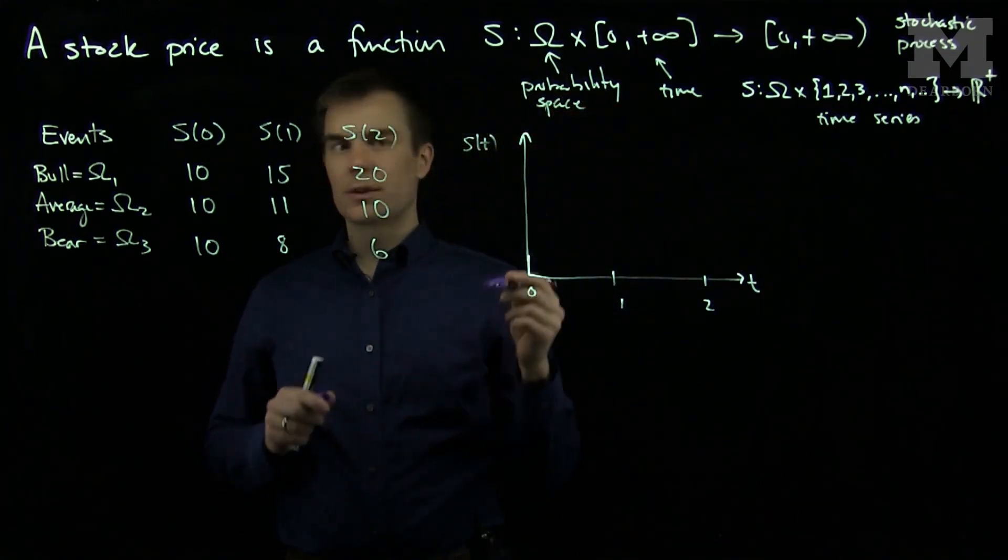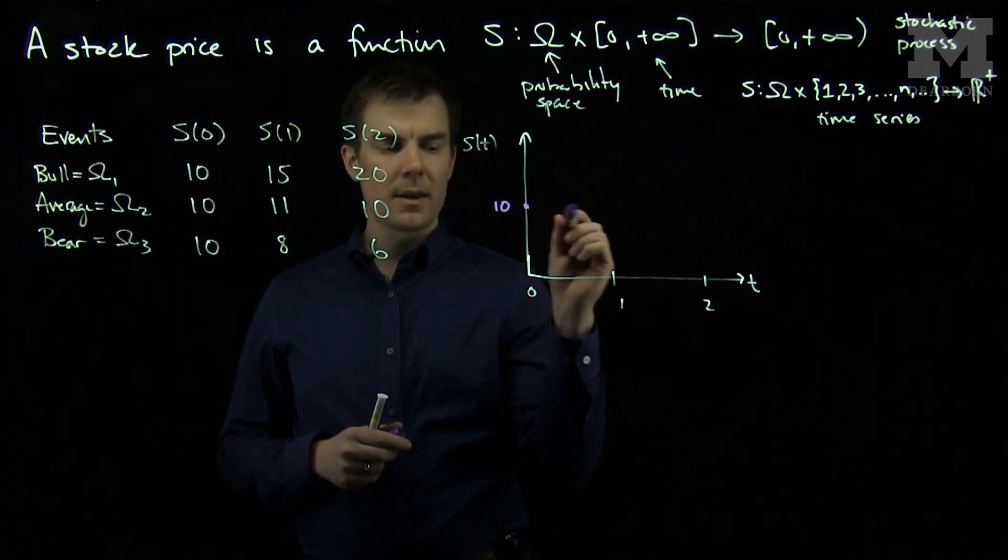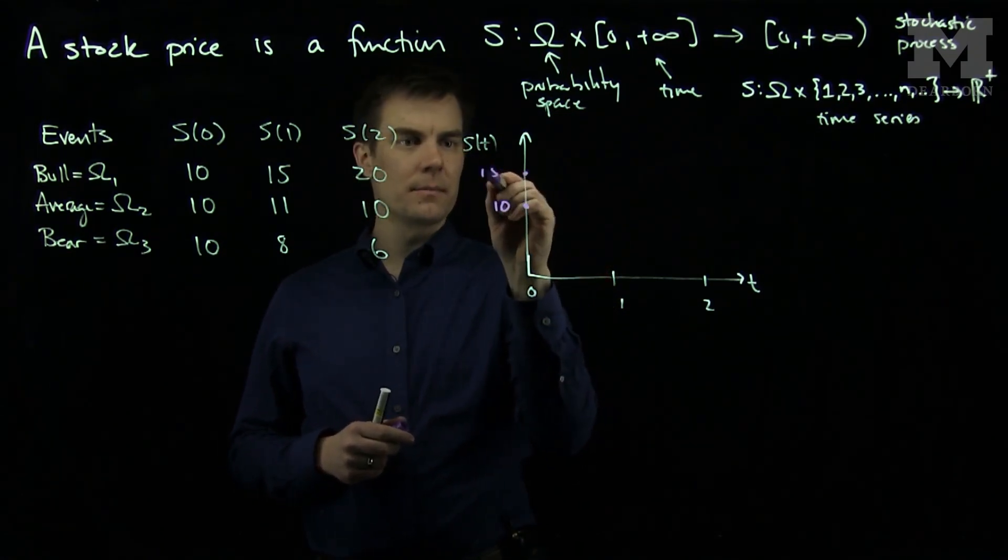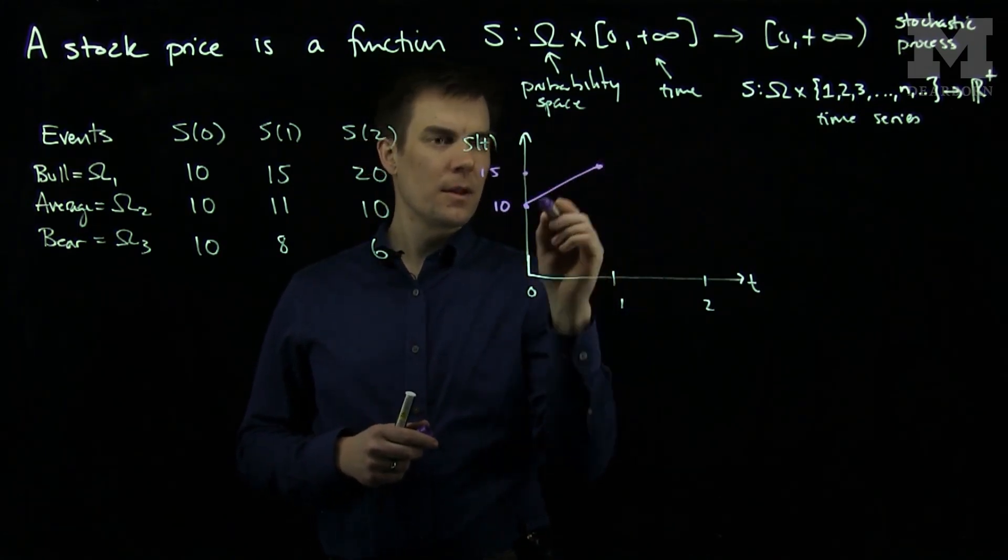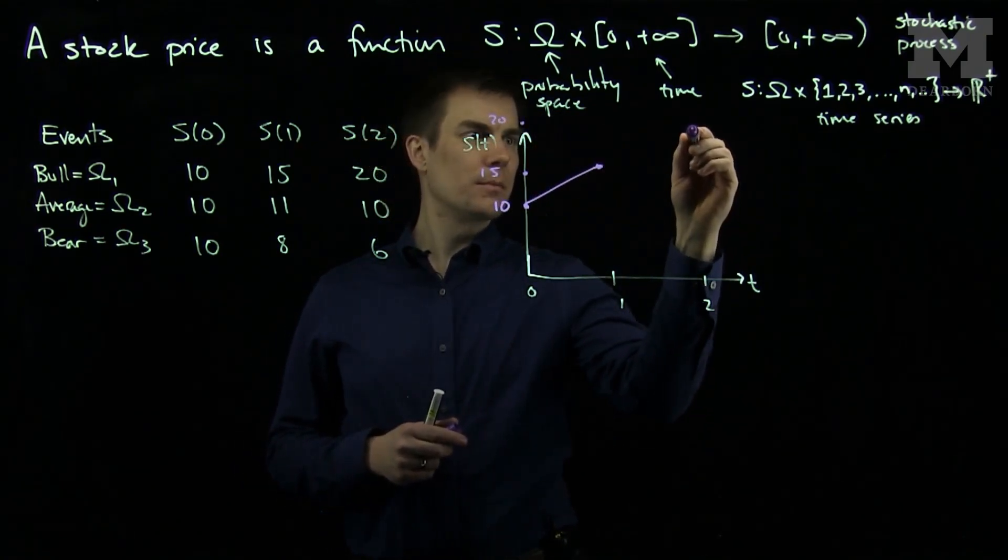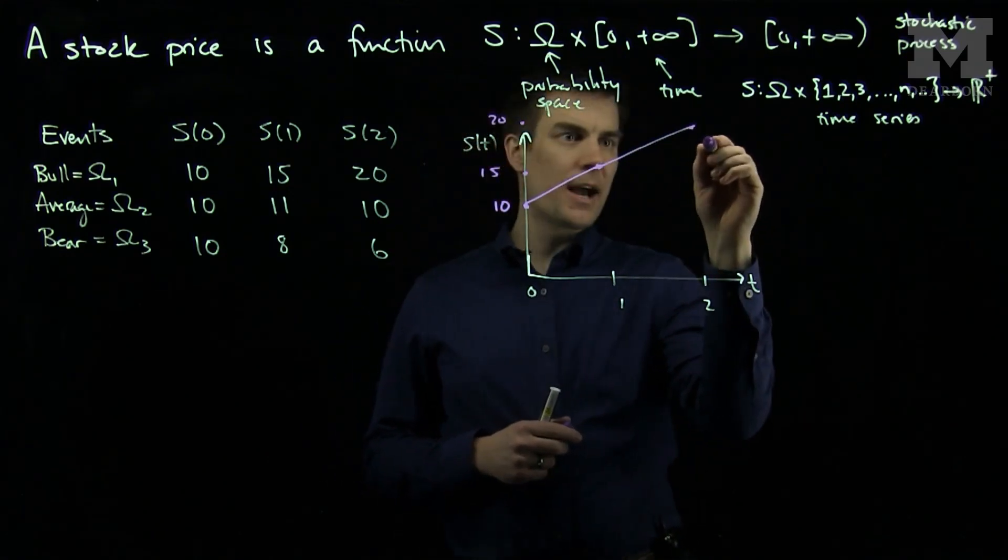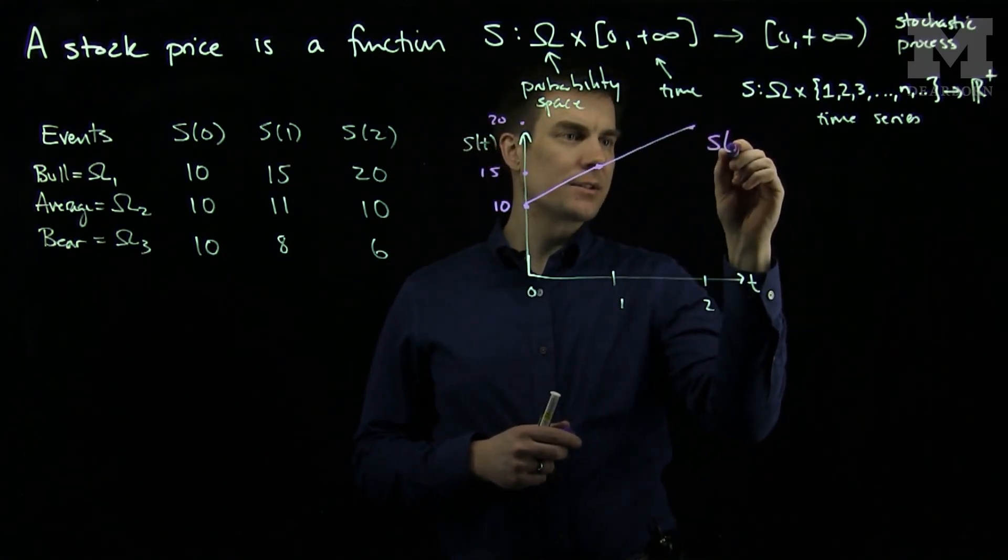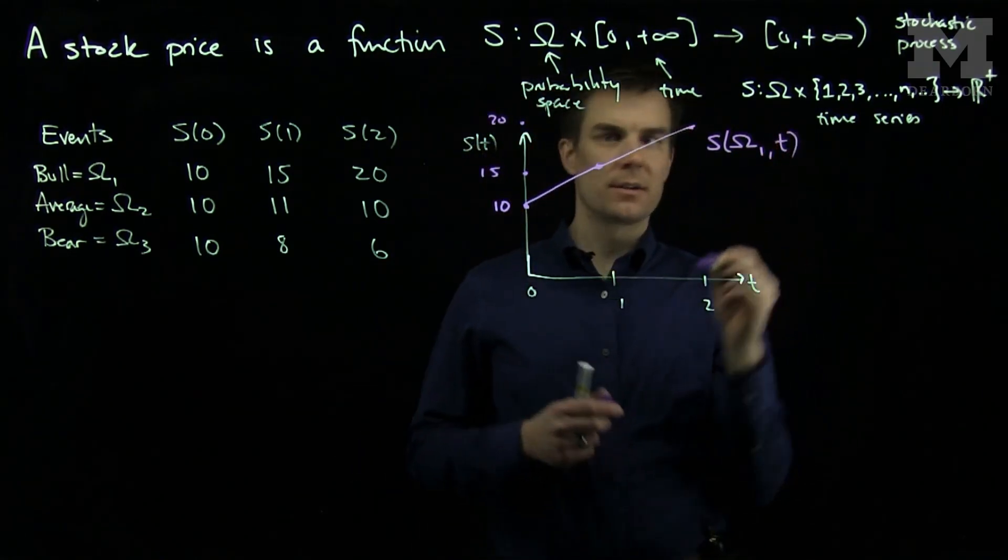So for the bull trajectory, the bull sample path, I will start at 10. And then the bull will go up to 15 at time one. And then it will go up to 20 at time two. So this purple path over here is the sample path S of omega one, my bull path with respect to t.